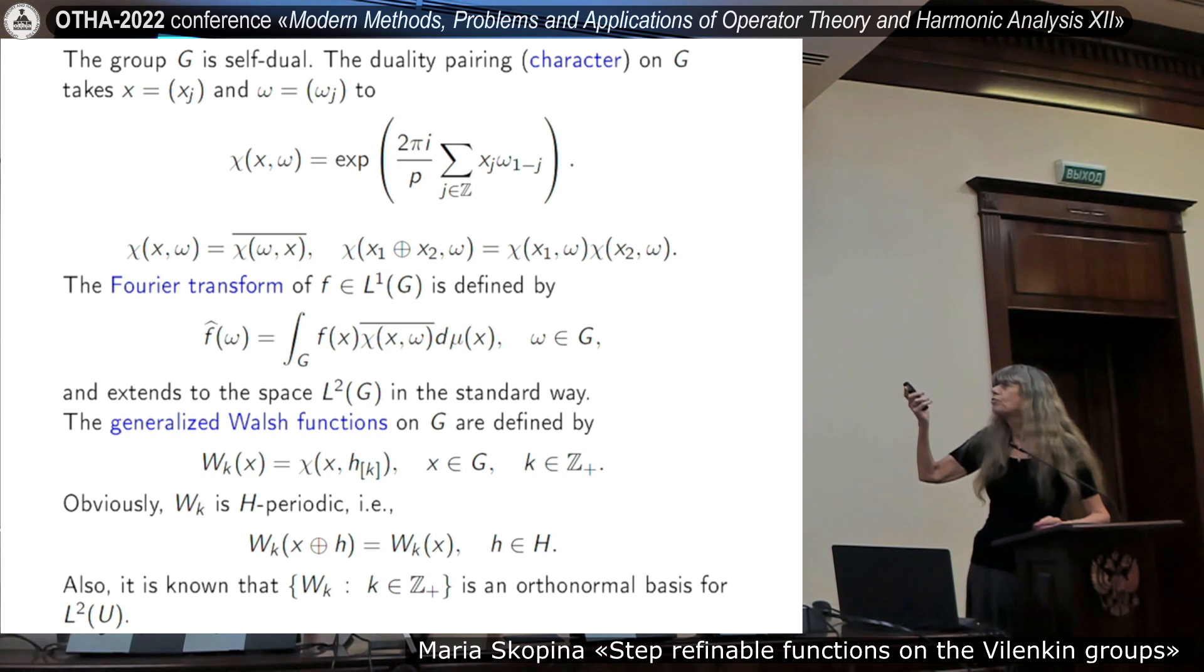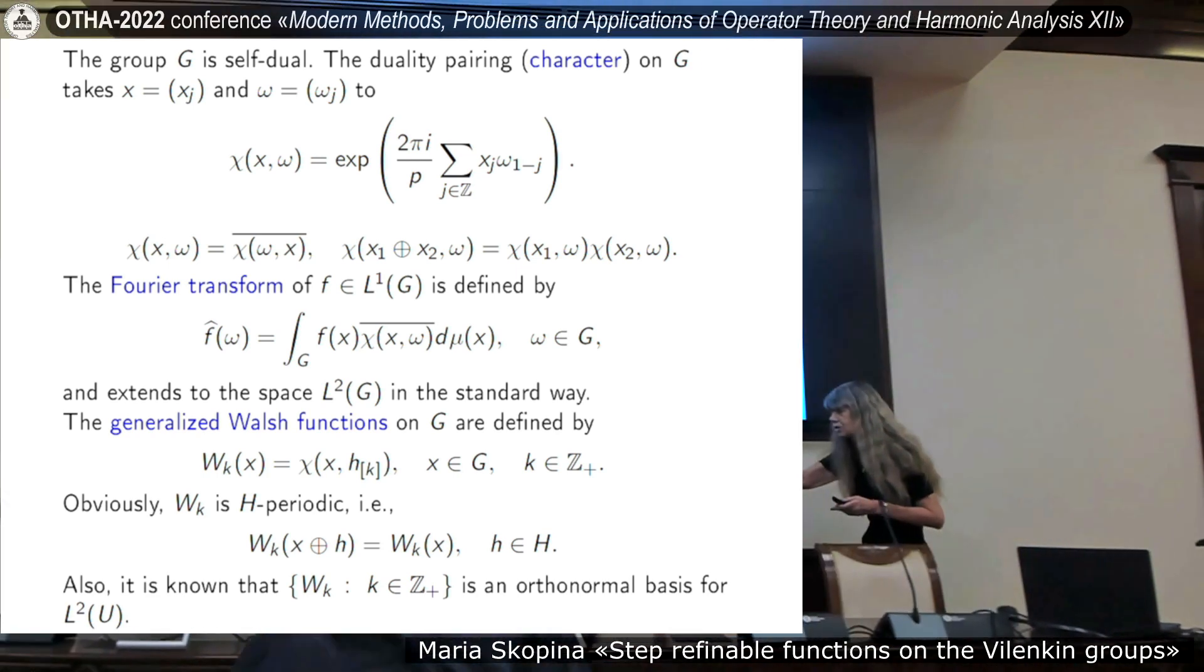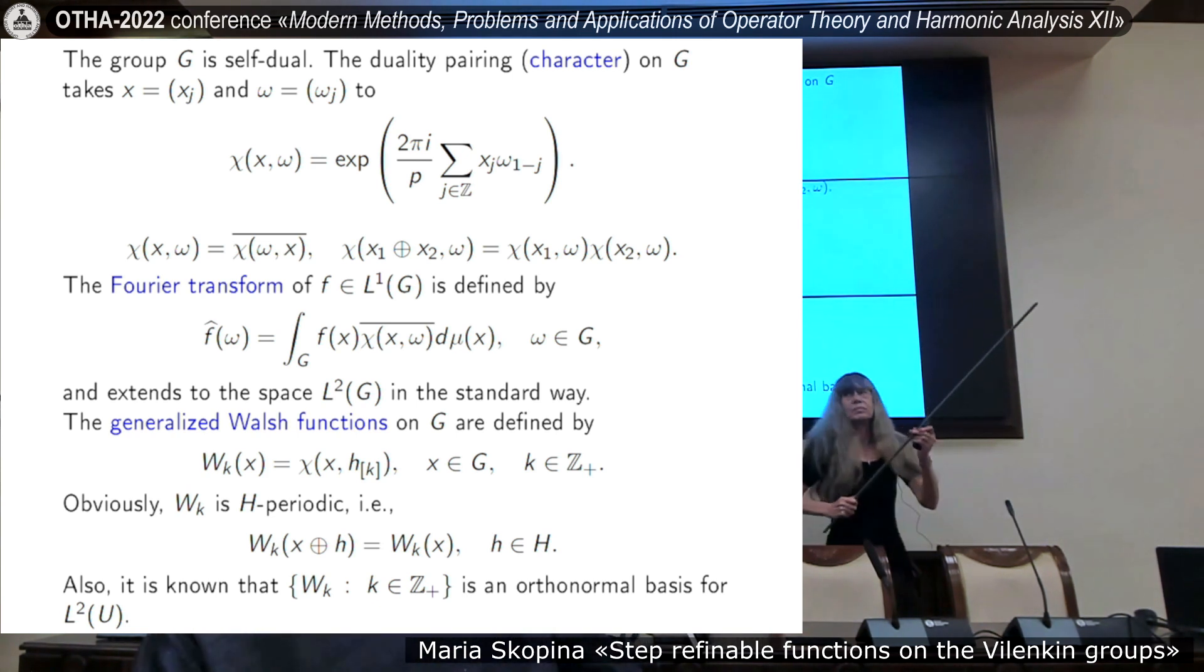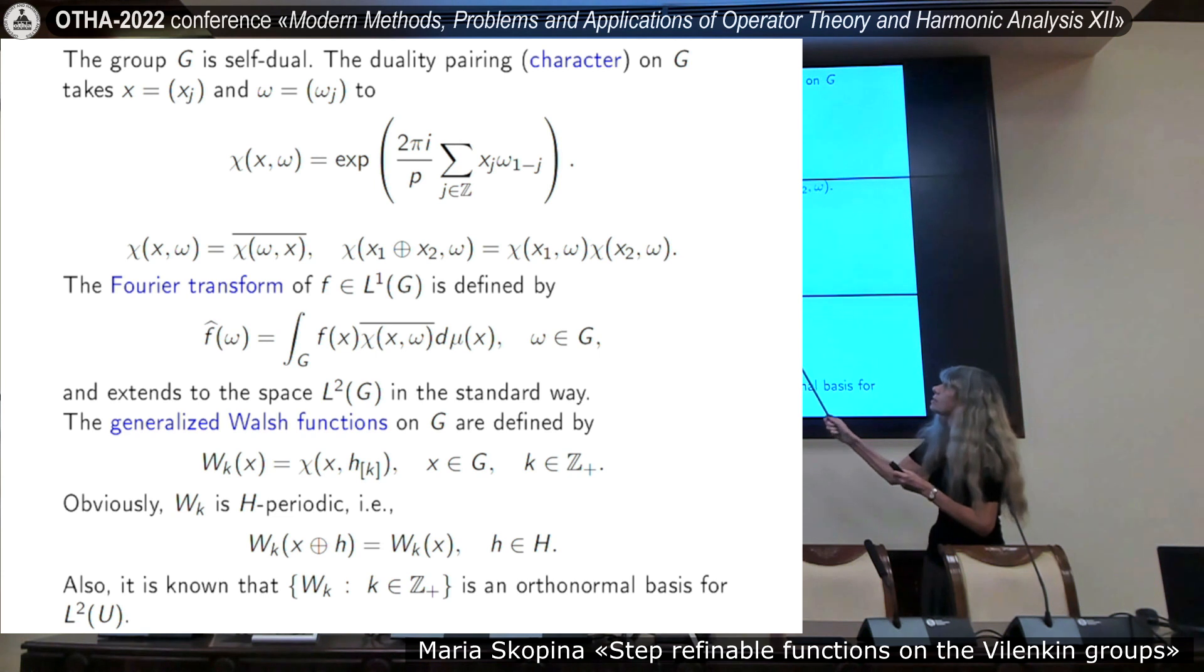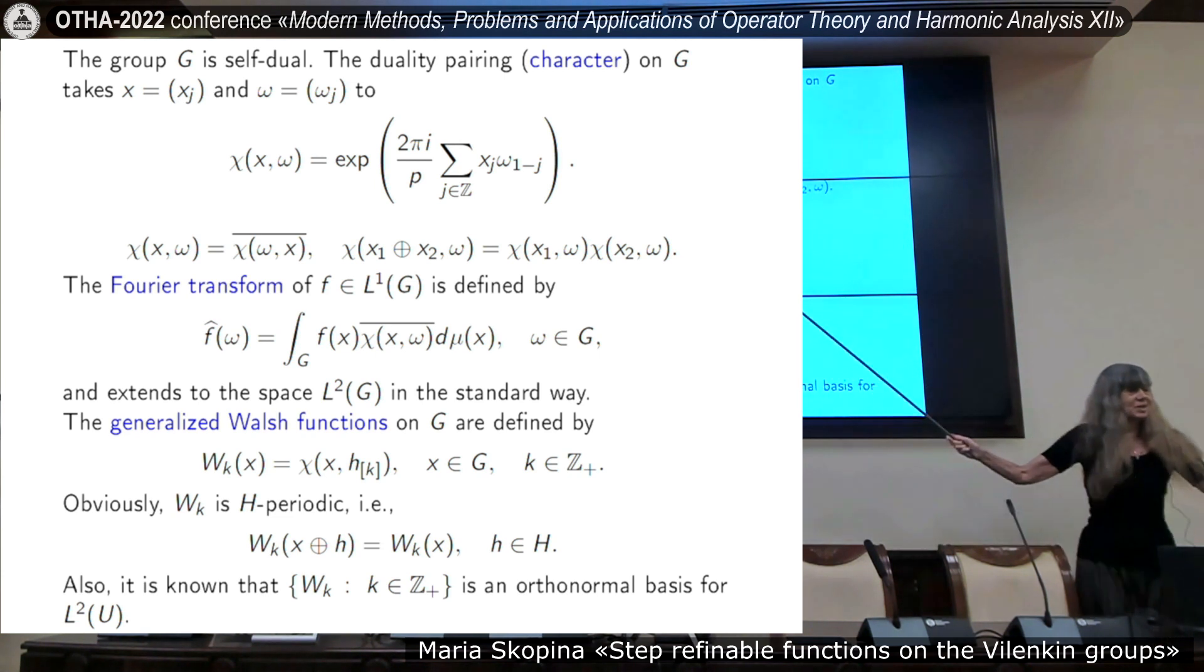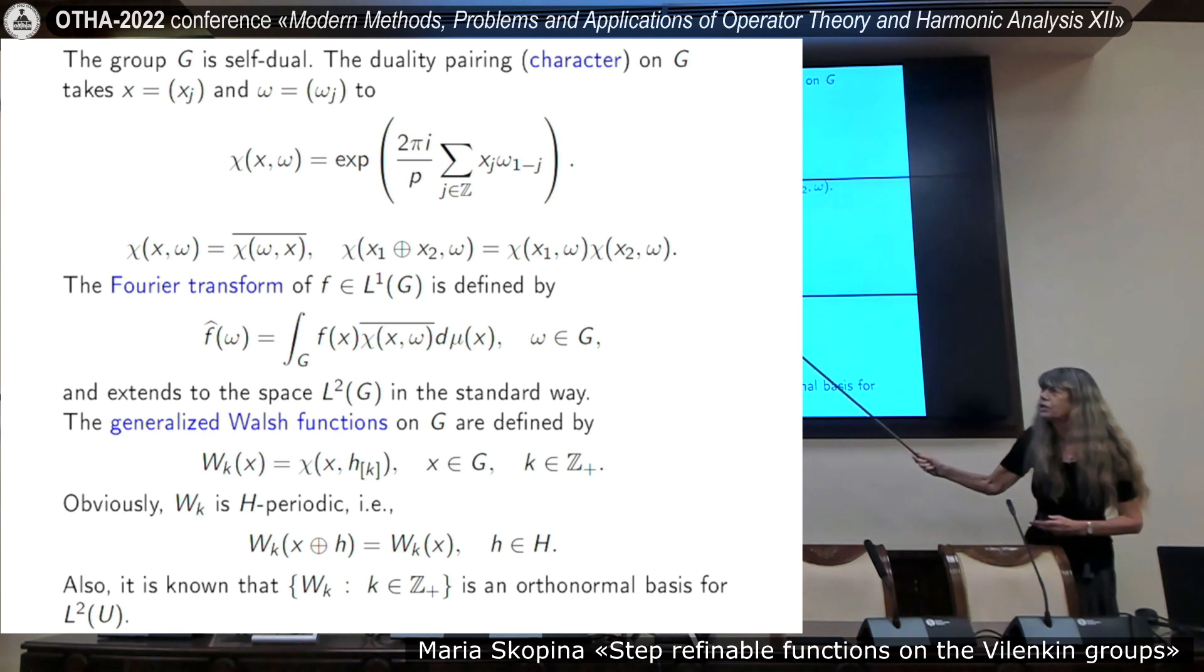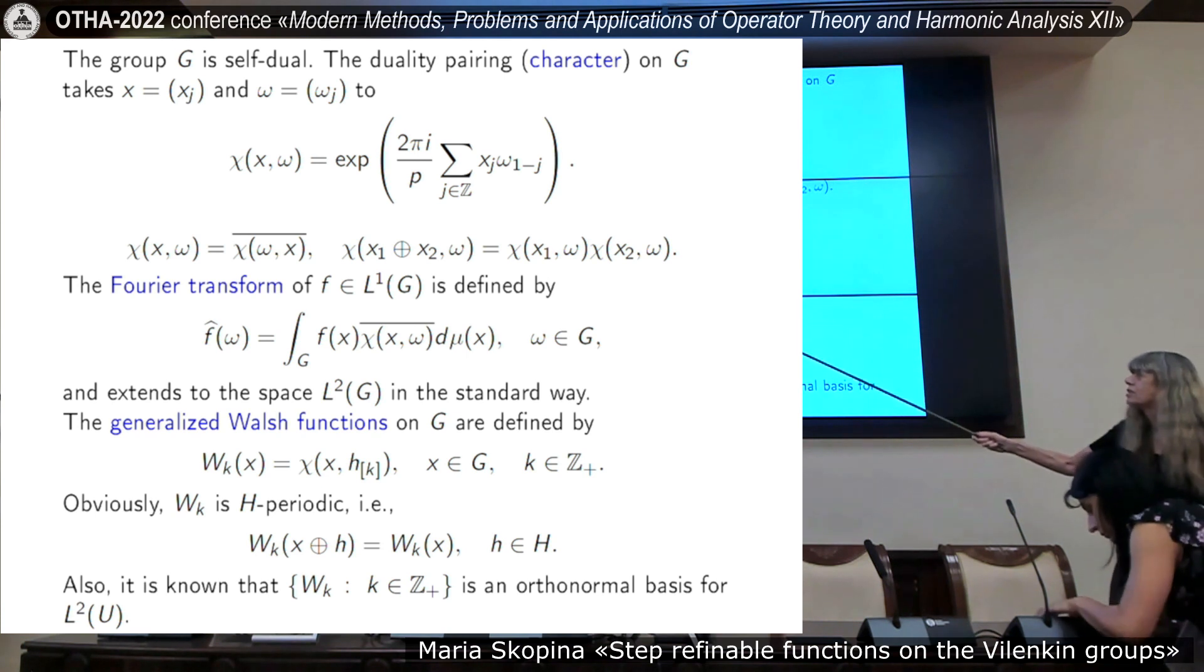In real setting, we have just exponent of x omega. And here, such formula, coordinate-based exponents. But this is analogous, usual exponent of the real setting. Fourier transform for a summable function is defined by this formula. Fourier transform is given instead of usual exponent in the real setting. And, of course, this notion extends to the space L2 in the standard way.